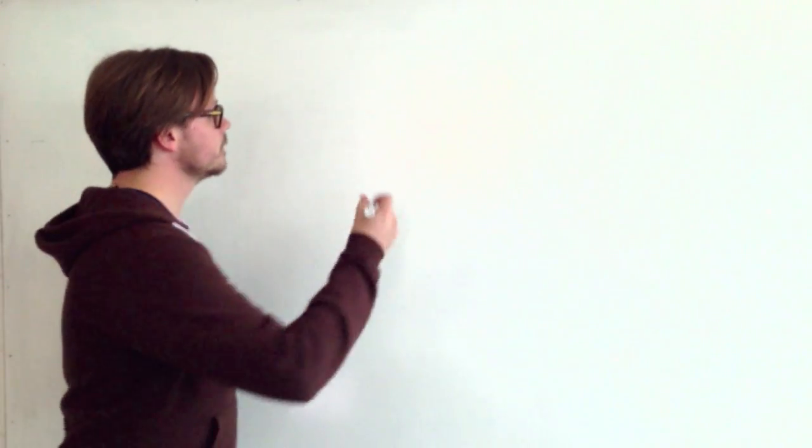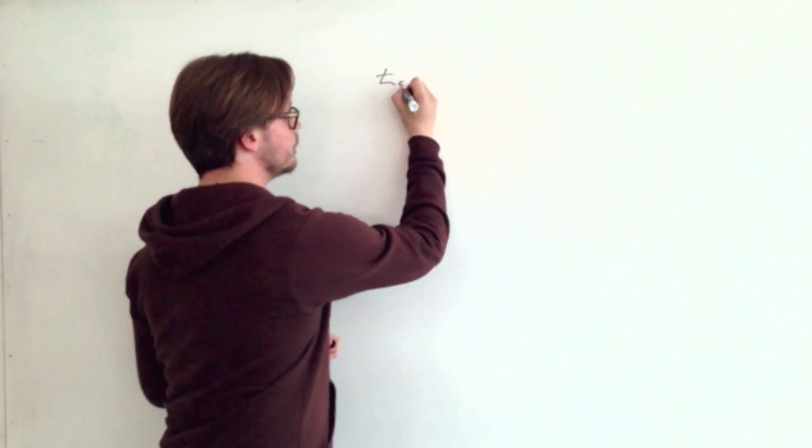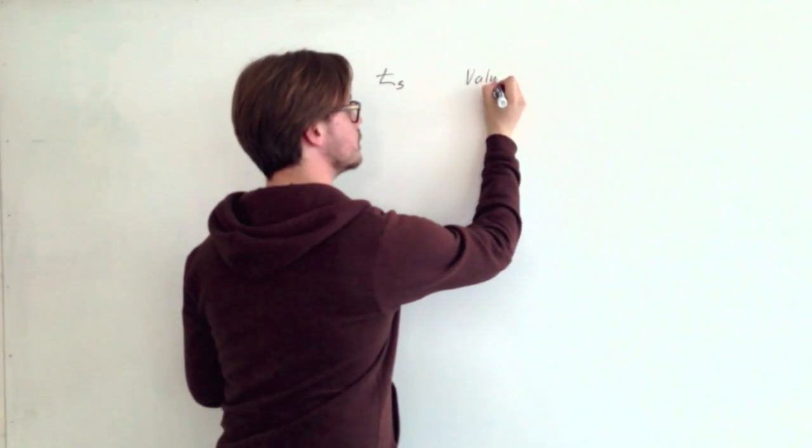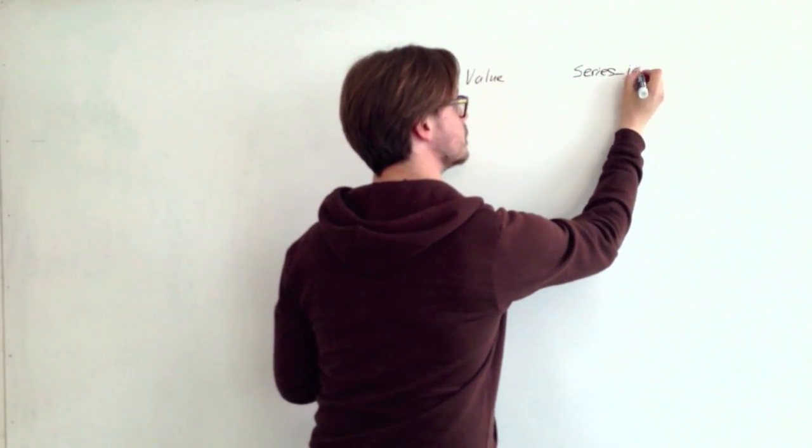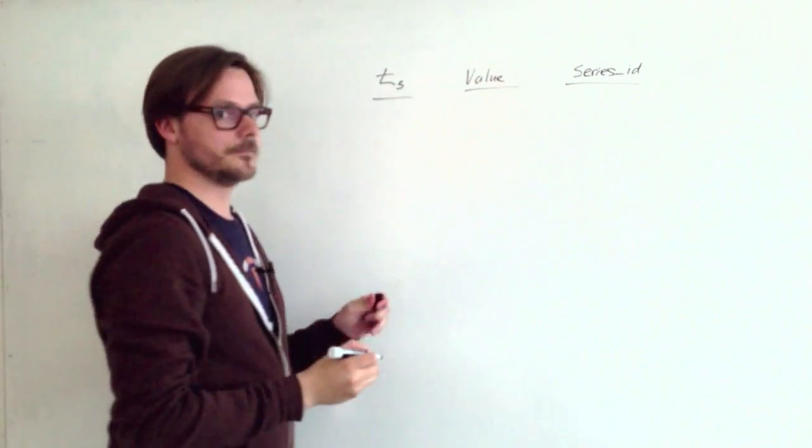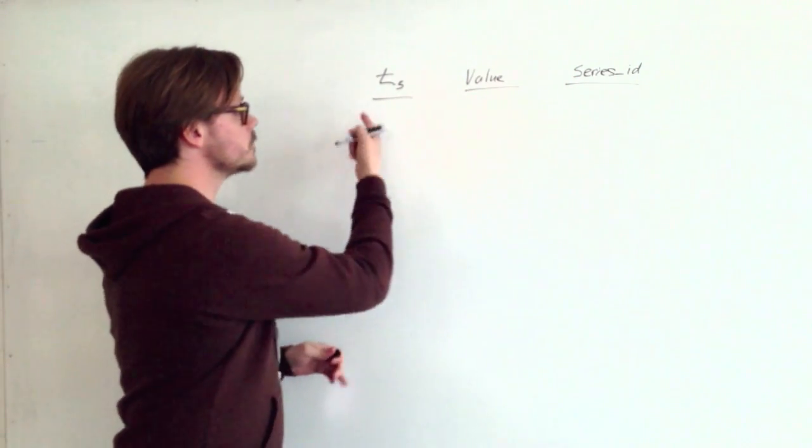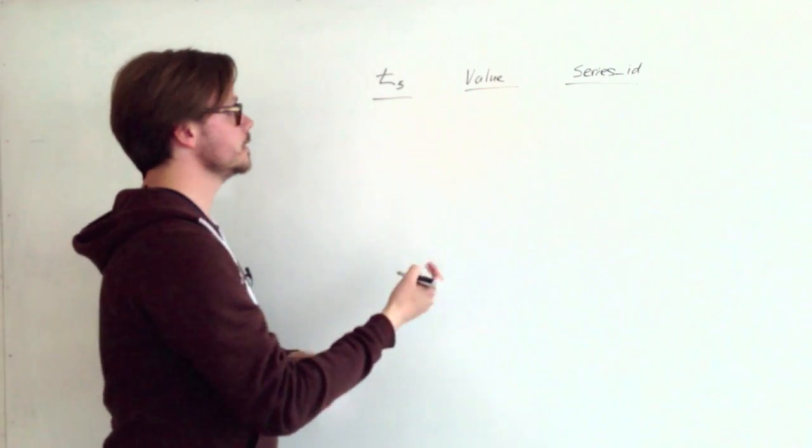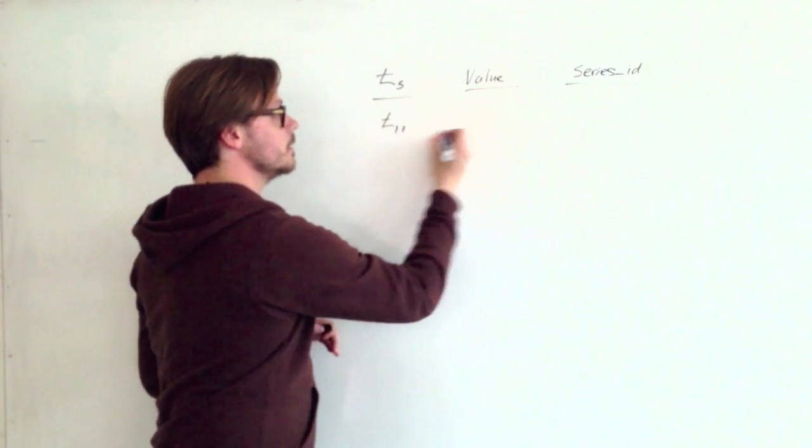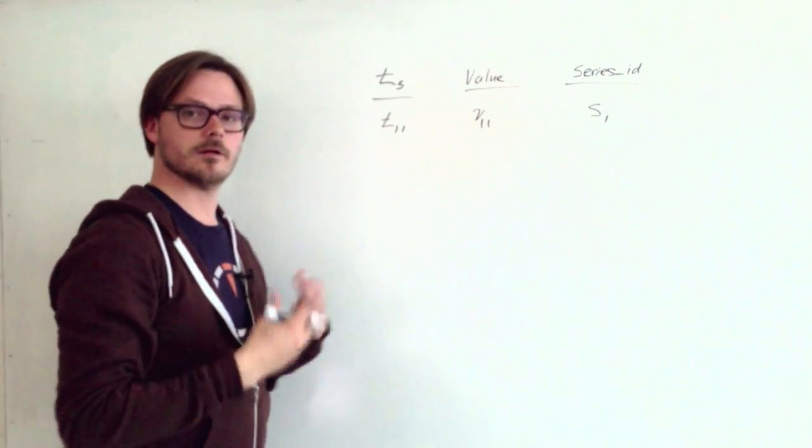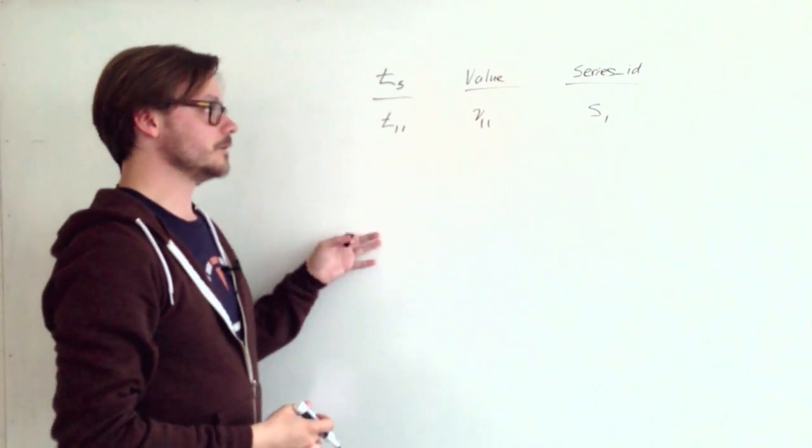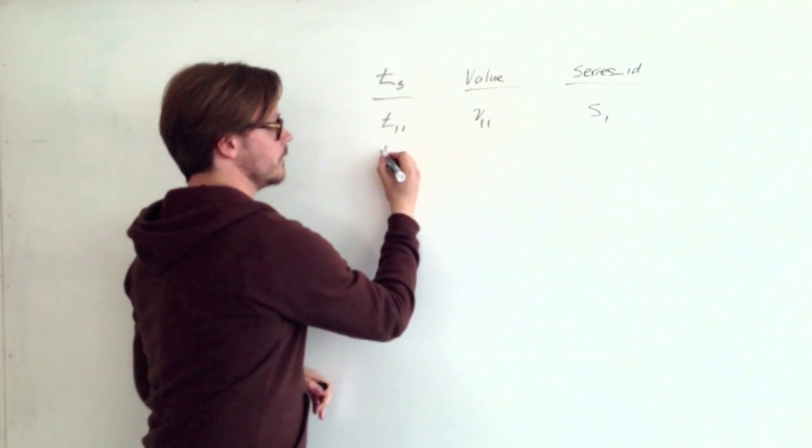So how would I store this in a relational database? The simplest way is with a single table. This table has three columns: the timestamp, the value, and some sort of identifier for the series, let's call it series ID. To store this data, each row represents a single data point for a particular series. For instance, T11 for series one. Since we're measuring this data over time, these rows could have different values for different series.